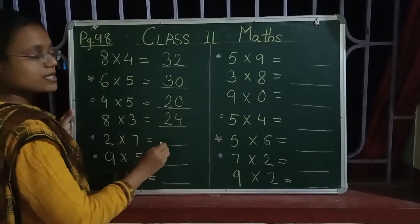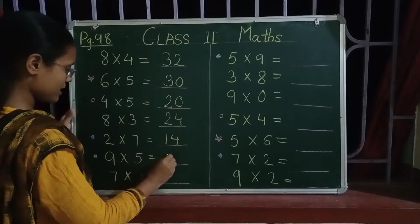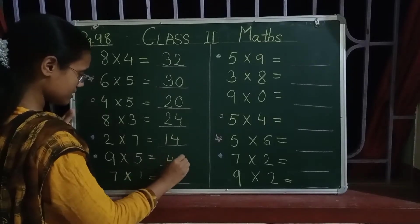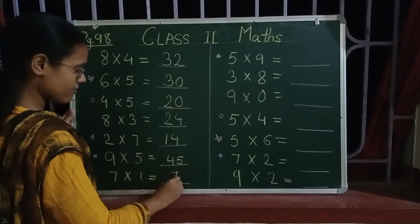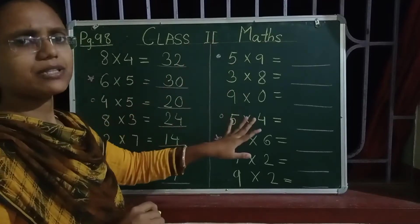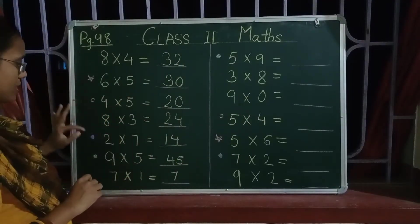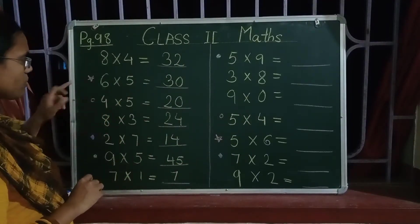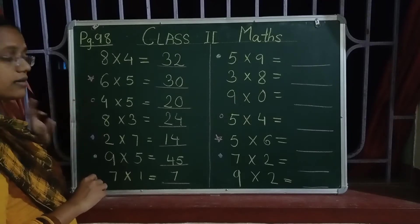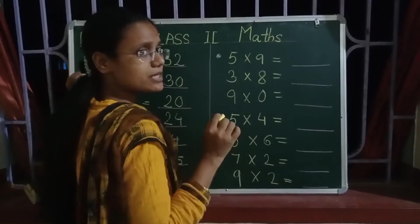Now the next is 2 sevens are 14. 9 fives are 45. 7 ones are 7. Let us complete everything, then we will see what the marks mean here — why there is a star, why there is a circle, diamond and a dot. First let us complete.